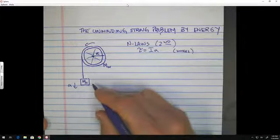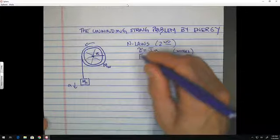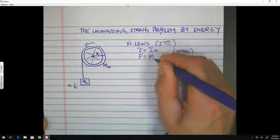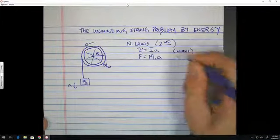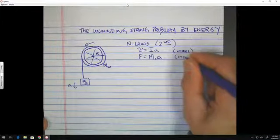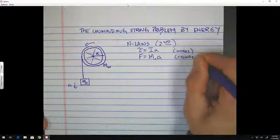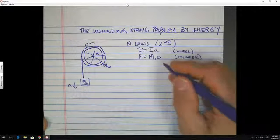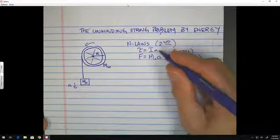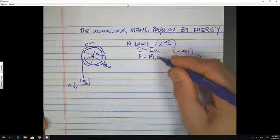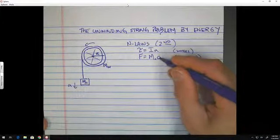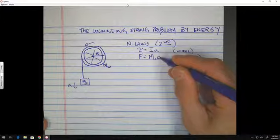And then we had to look at the cylinder, and we had to write F is equal to M cylinder times A. And that was for the cylinder. And that gave us basically a system of equations. And we had to recognize that alpha and A are related to each other.